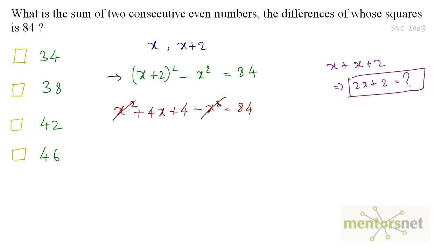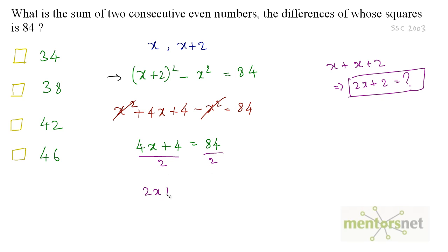The x² and minus x² cancel out, giving us 4x + 4 = 84. Dividing the whole equation by 2, we get 2x + 2 = 42, and that is exactly what we had to find — 2x + 2 — and that equals 42. So the answer is option C.